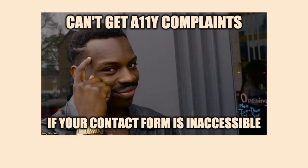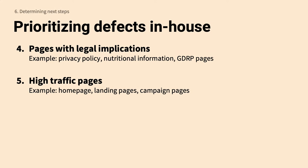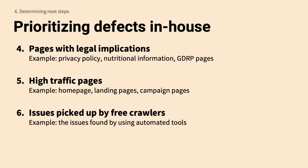Also prioritize pages with legal implications — privacy policies, nutritional information. Prioritize high-traffic pages: homepages, landing pages, campaign pages. And prioritize issues picked up by free crawlers. Anytime I see issues getting picked up by the free crawlers and there are a lot of them, I think 'what else is under the hood?' Also, if someone is looking for somebody to sue, they're going to run that free crawler — if you don't have issues being picked up, maybe they'll move on. Fix any issues picked up by free crawlers.